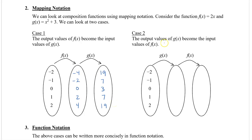In case 2, let's see what happens when we take the output values of g of x and then input them into f of x. So we have negative 2, which we're going to put into g of x: negative 2 squared plus 3, which is 7. Negative 1 put in for x: negative 1 squared is 1 plus 3, which is 4. And we continue with the other x values as well.